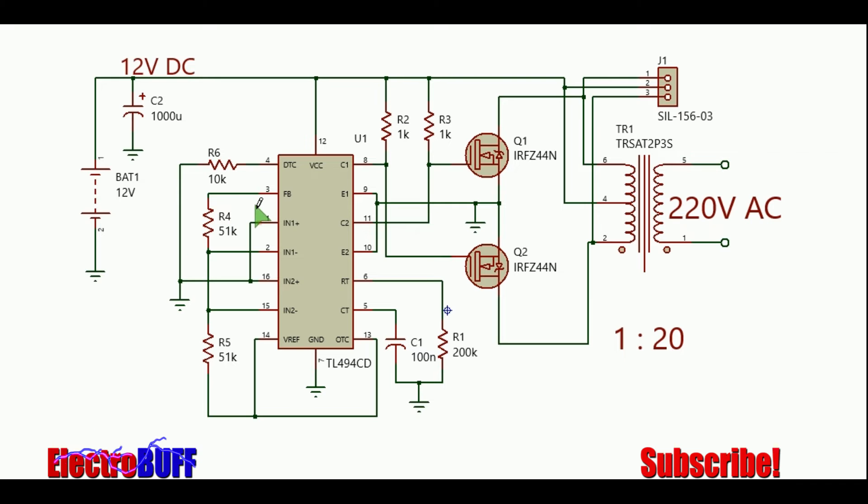The frequency is determined by the formula F = 1/(2*Rt*Ct) with Rt being R1 and Ct being C1. The formula is shown and with the parameters as 100 nanofarads and 100 kilo ohms, the frequency will be 50 hertz which is ideal for most electronic appliances.